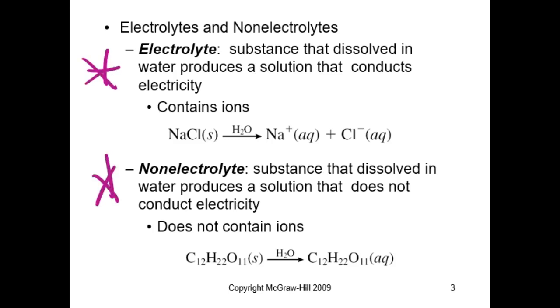Electrolytes are substances that dissolve in water producing a solution that conducts electricity. An electrolyte conducts electricity. It does contain ions. So what happens is they break—a solution like salt will break up into a sodium and a chlorine ion which have charges. Ions have charges, and so the ions are what can conduct the electricity.